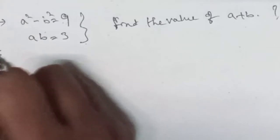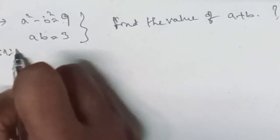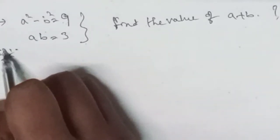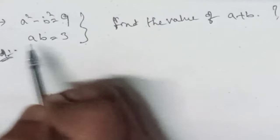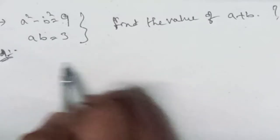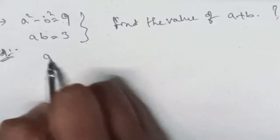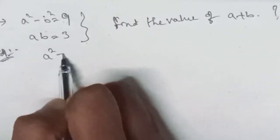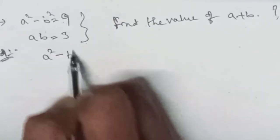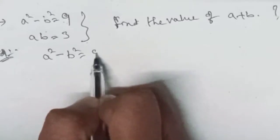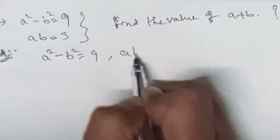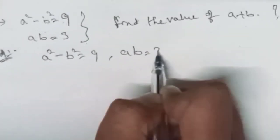So we need to find the value of a plus b. Given: a squared minus b squared is equal to 9, and ab is equal to 3.